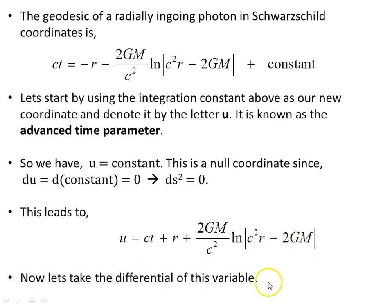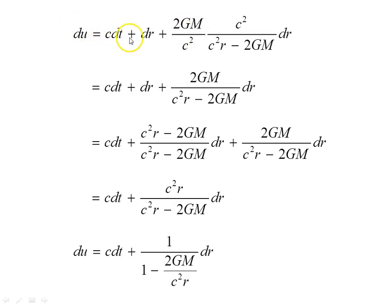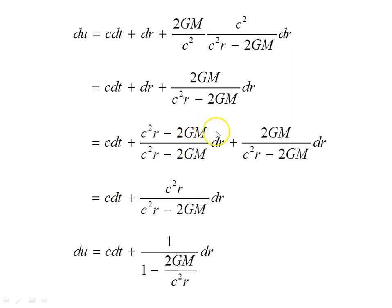Taking the differential of u, we get du equals c dt plus dr plus this object here. Tidying it up, canceling c-squareds, finding a common denominator and adding fractions, we notice that part of the numerator cancels, leaving c squared r over this object. A little factorising puts it in the form: du equals c dt plus 1 over this object, dr.